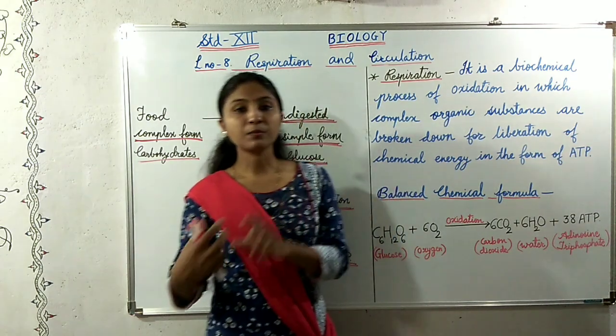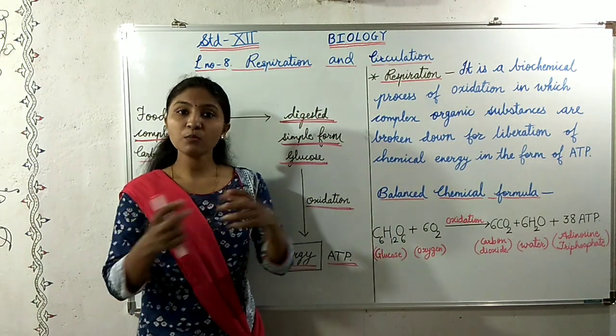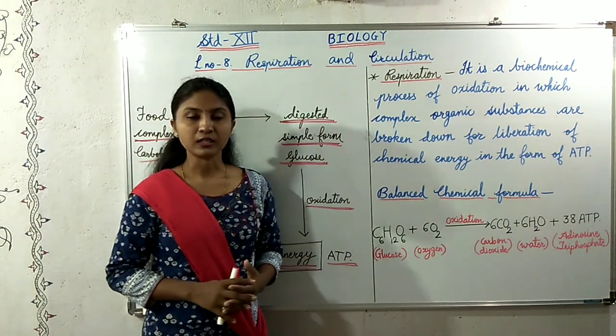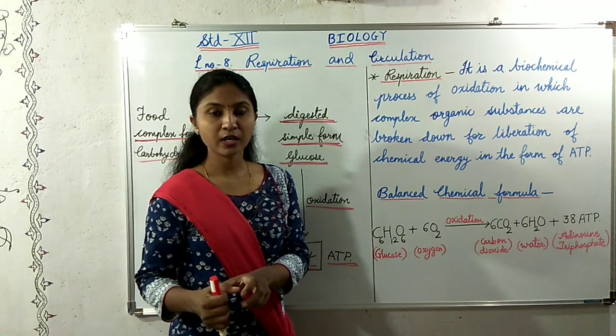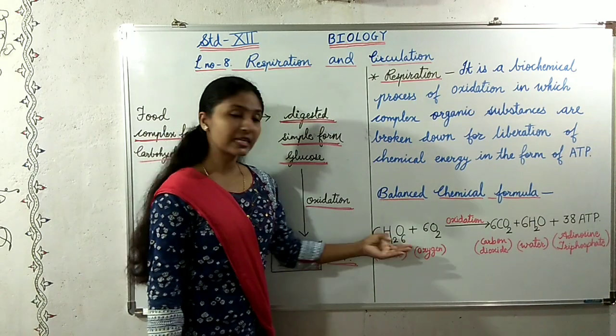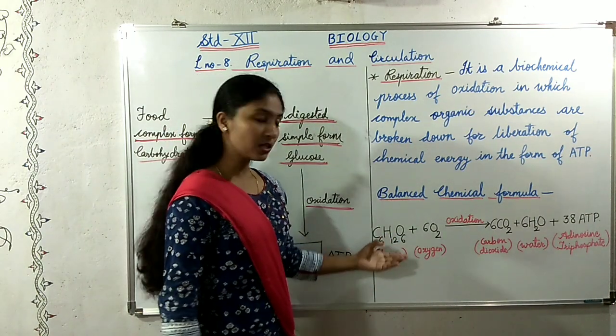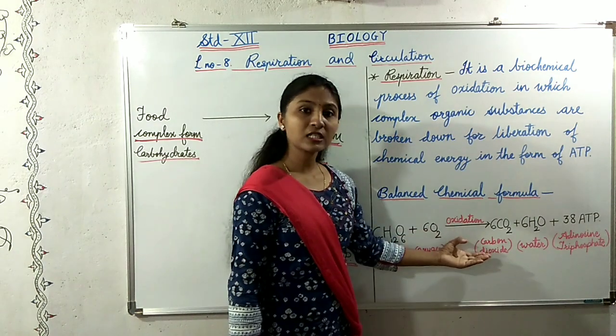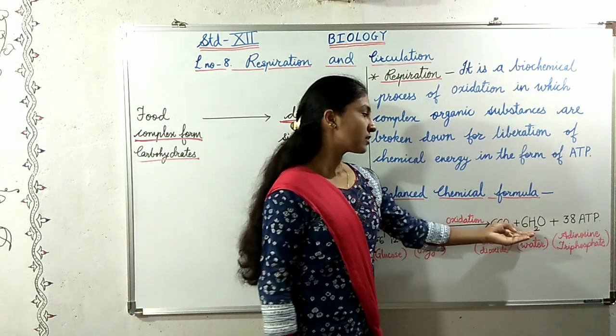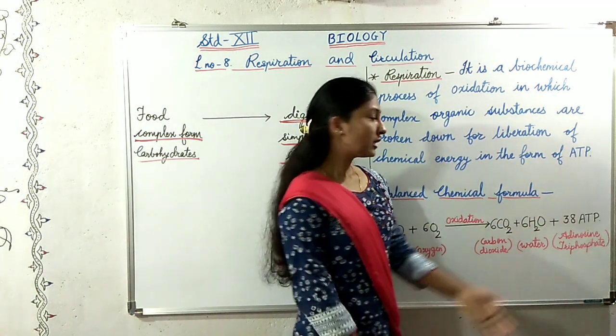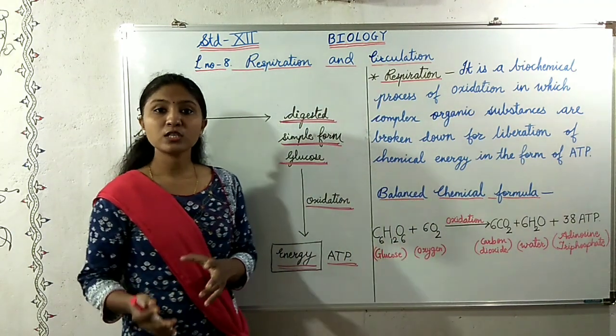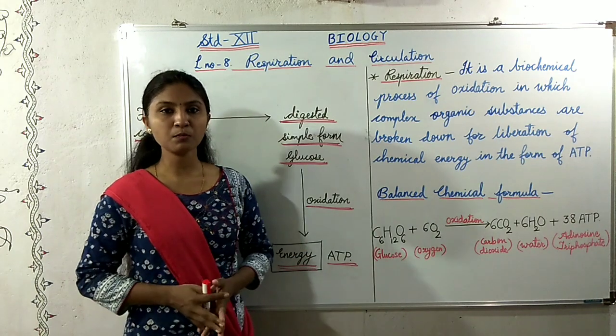This process of respiration is also stated in a balanced chemical formula, that is C6H12O6. This glucose is oxidized and the products that we get are 6 molecules of carbon dioxide, 6 molecules of water, and 38 molecules of ATP. ATP means adenosine triphosphate which is a high energy molecule.